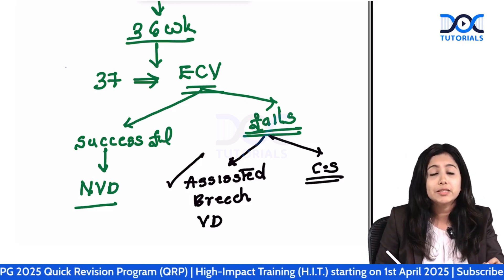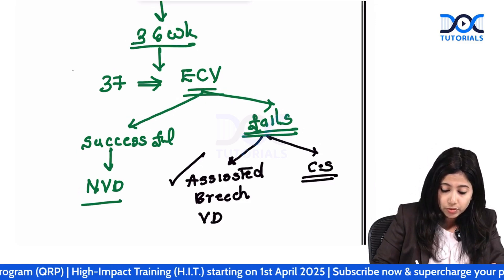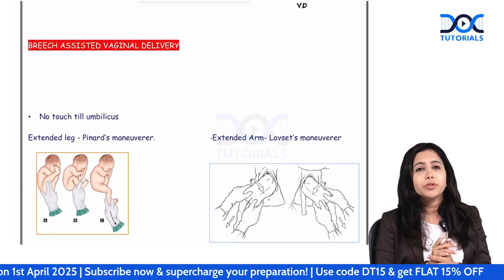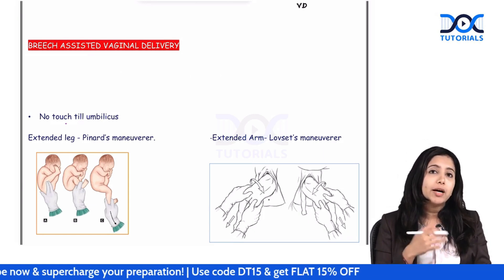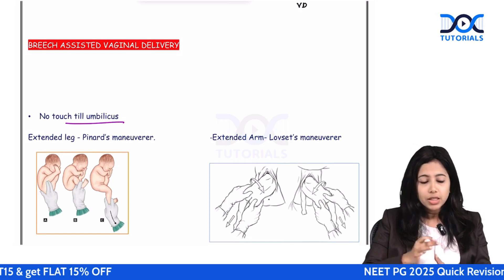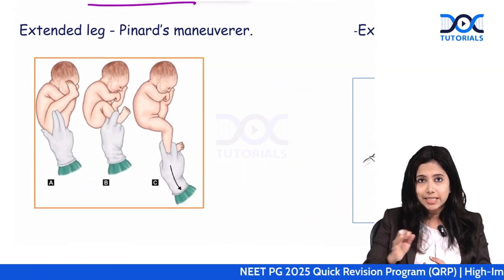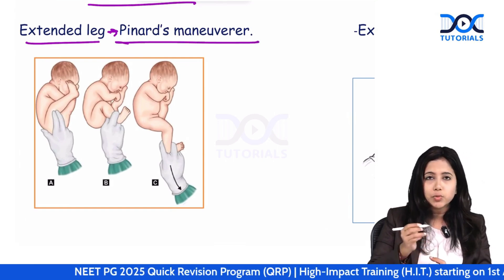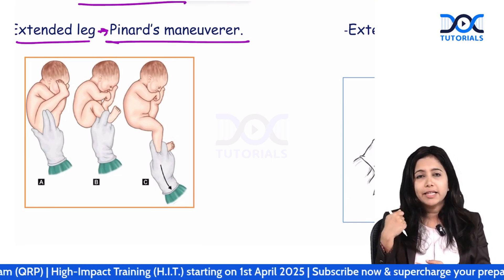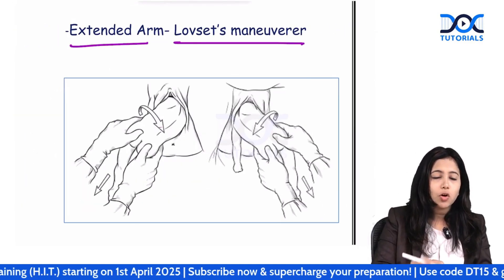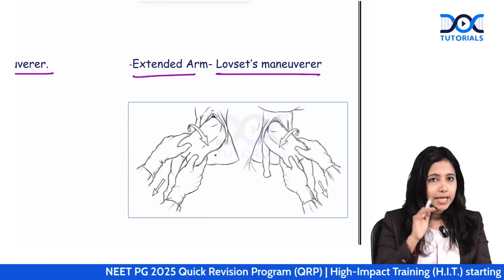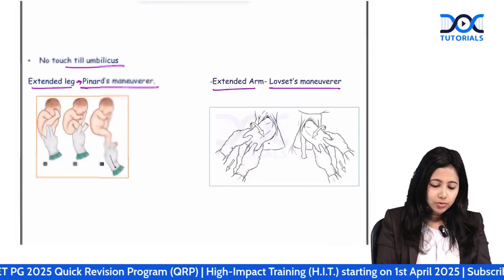In assisted breech vaginal delivery there are various maneuvers. Initially we allow the baby to deliver on its own — no touch until you see the umbilicus. If you have extended legs, the maneuver used is Pinard's maneuver: you apply pressure on the popliteal fossa to flex and deliver the leg. If you have an extended arm, you use Lovset's maneuver: turn the baby through 180 degrees to deliver the arms.